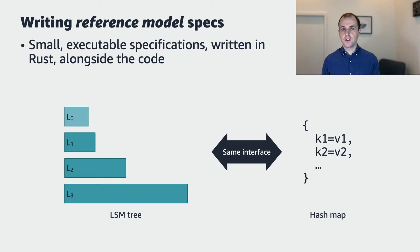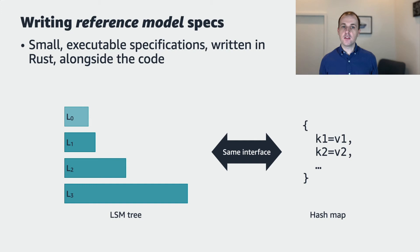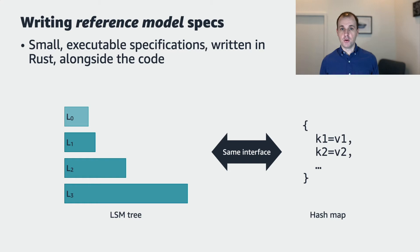For example, the reference model for a log-structured merge tree is a hash map. They both have the same put and get interface, they both have the same semantics, but the hash map doesn't have to worry about performance, or space usage, or memory efficiency, or any of the other implementation concerns. We write a reference model for each ShardStore component, both the front-end APIs that we present to the rest of S3, and internal components such as extent management, indexing, and IO scheduling. We also reuse our reference models as mocks for unit testing, which makes them much easier to maintain. As our engineers write new unit tests, they're incentivized to also update the reference models, so they're implicitly updating the specification.